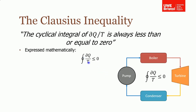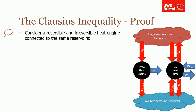So what does that mean? Expressed mathematically, the cyclical integral of the change of heat with temperature is always less than or equal to zero — as we integrate the heat that's supplied or ejected with temperature, they'll always come back to zero. If you want the proof of this, I suggest you look elsewhere in the thermodynamics textbook, but I'm going to prove it to you over the next couple of slides. So let's consider our irreversible and reversible heat engines.